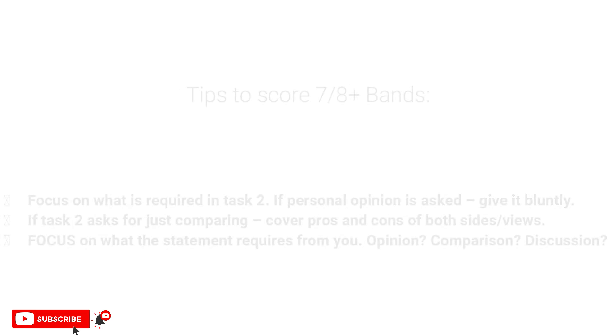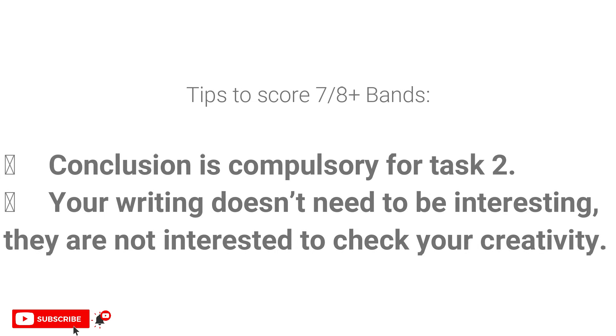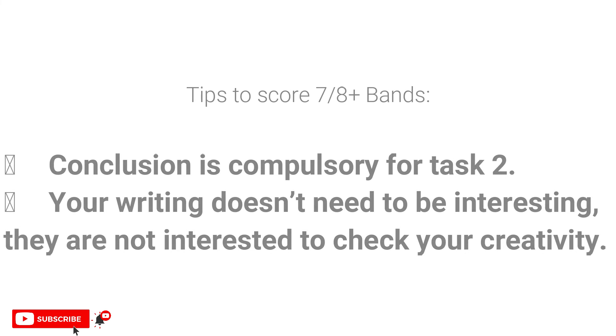The ideal answer format for a Task 2 question starts with an introduction, followed by body paragraphs one, two, and optionally a third, and ends with a conclusion. The first tip is to understand what is actually required — is the question asking for your opinion, a comparison, or a discussion? Note that a conclusion for Task 2 is compulsory, and your writing does not have to be creatively interesting, but it must be correct and logical.